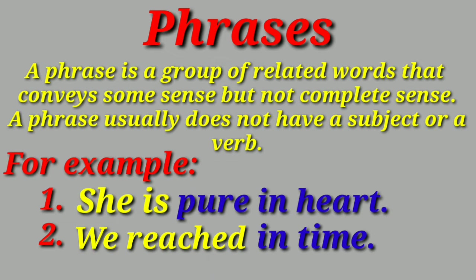Let's see the example. 'She is pure in heart' — 'pure in heart' is the phrase. 'We reached in time' — 'in time' is the phrase. So, a phrase is a group of words which forms a part of a sentence. It is a group that contains no finite verb. Therefore, it cannot stand by its own and convey a complete meaning.